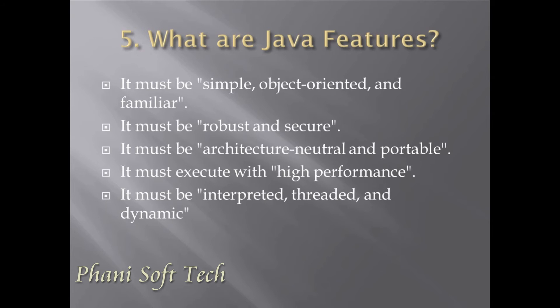The first feature of Java is that it must be simple, object-oriented, and familiar. The second feature is it must be robust and secure. The third feature is it must be architecture-neutral and portable. The fourth feature is it must execute with high performance.